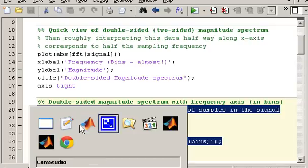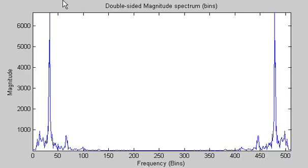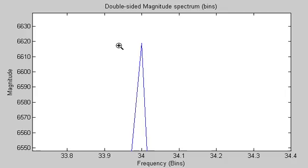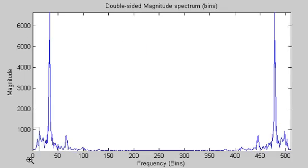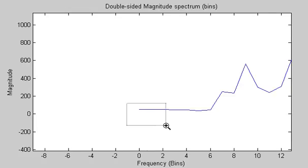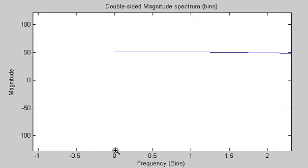And then when I open up my figure, what you can see is when I zoom in on the peak now, this peak is now labeled correctly as bin number 34. And if I zoom in at the start of my magnitude spectrum, we can see that the first bin is correctly labeled as 0.